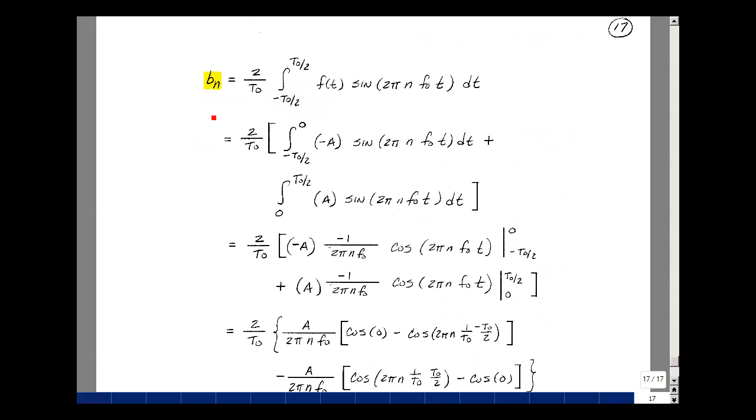To find the value of B sub n, let's go back to our definition of the Fourier series, where B sub n was defined to be 2 over T0, integral over a period of f(t) times the sine of 2πnf0t dt. f(t) has two values. Between minus T0 over 2 and 0, it has a value of minus A. And then from 0 to T0 over 2, it has a value of A.